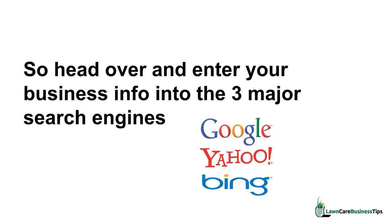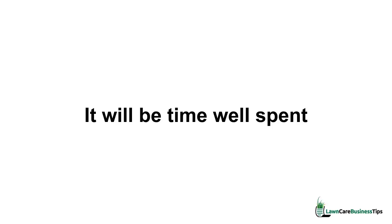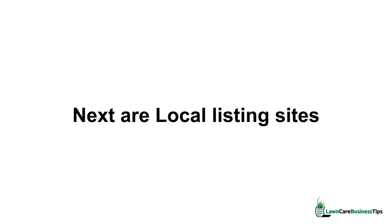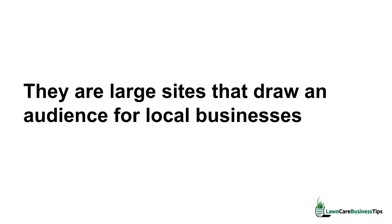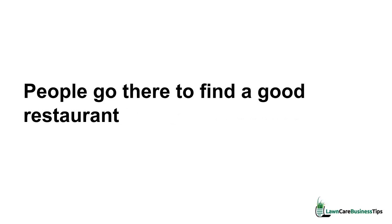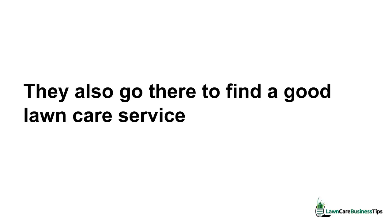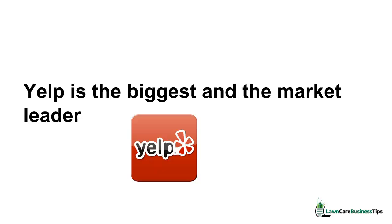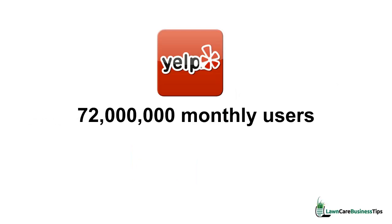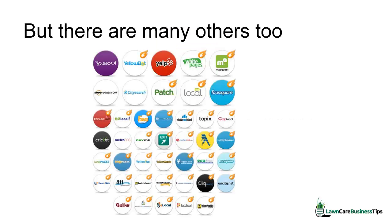It will be time well spent. Next are local listing sites — they are large sites that draw an audience for local businesses. People go there to find a good restaurant; they also go there to find a good lawn care service. Yelp is the biggest and the market leader with over 72 million monthly users, but there are many others too.